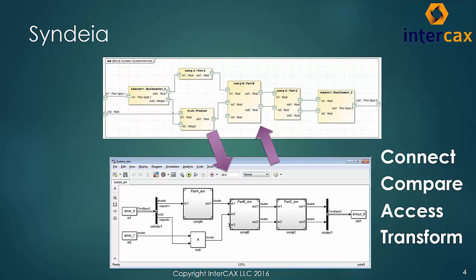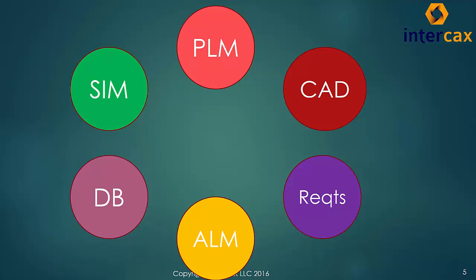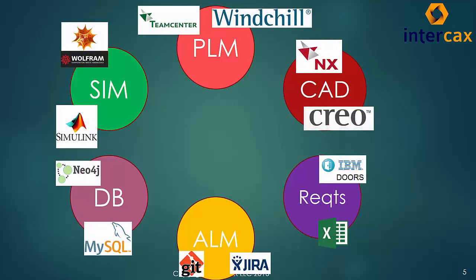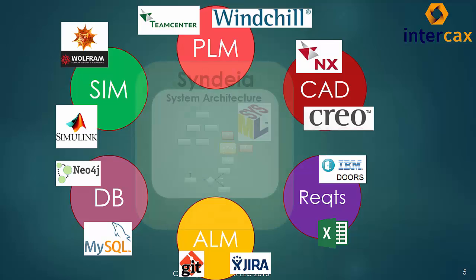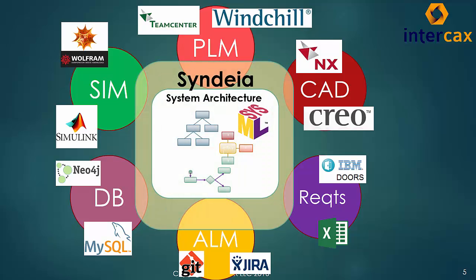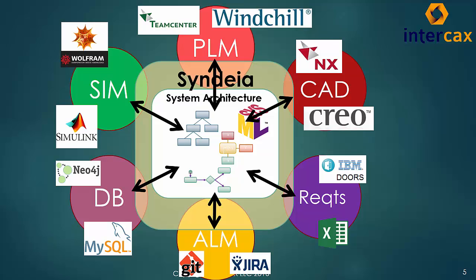Cyndia can be implemented piecewise, focusing initially on critical high-value data connections, but extensible to new use cases as the needs arise. No engineering group can rely on a single software vendor for all its needs — even if they chose to, the need to work with partners and customers prevents it. Cyndia reaches across vendor boundaries, connecting through native, REST, or OSLC APIs, even file transfer, depending on the use case and tools.